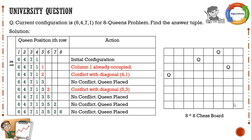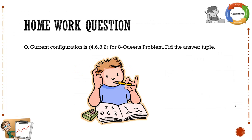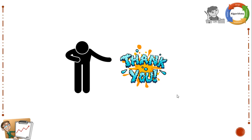I hope you have understood how to solve the 8-Queens or any N-Queens problem using the brute force method. Here is a homework question: the current configuration is 4-6-8-2 for the 8-Queens problem — find the answer tuple. Please solve it and give your answer in the comment box. Thank you for your patience. If you have any doubts or queries, please put them in the comment box. Thank you once again, have a great day.